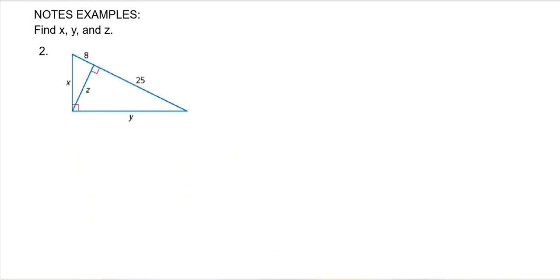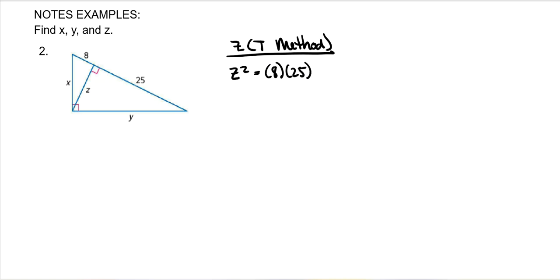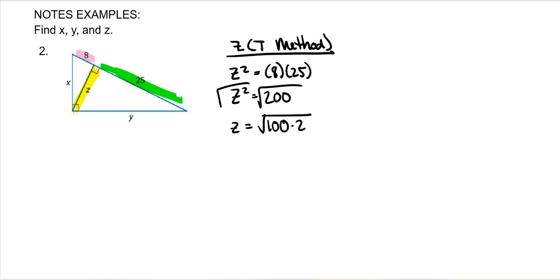So the first thing we want to solve for is Z, because the T method is the easiest. Z squared is equal to 8 times 25 — each individual part of the hypotenuse. 8 times 25 is 200. Taking the square root of both sides: the square root of 200 is the same as the square root of 100 times 2, which is 10 square roots of 2. In Schoology, you would write 10 SQRT(2).